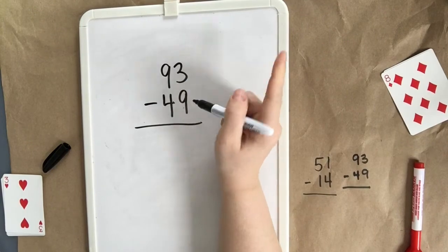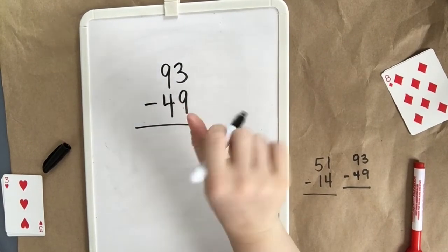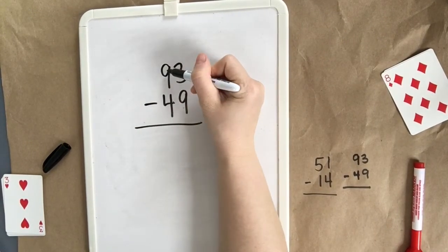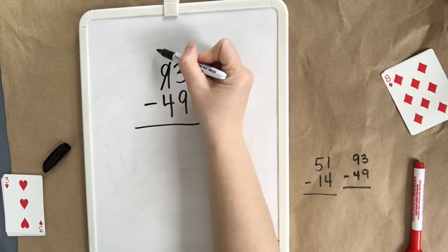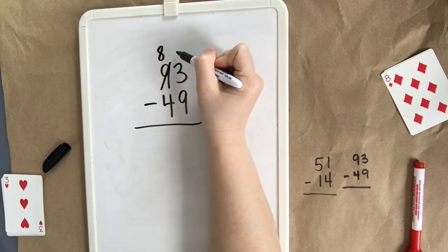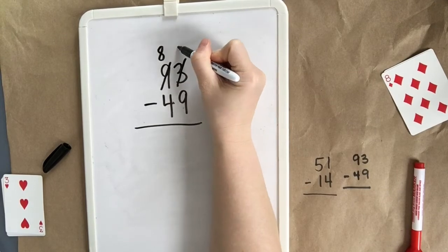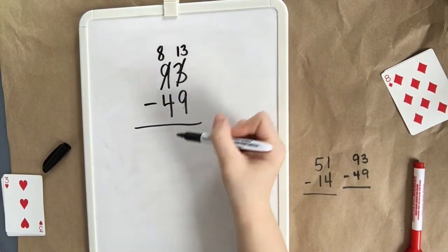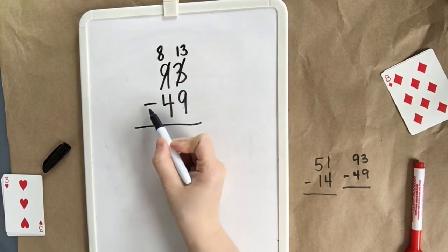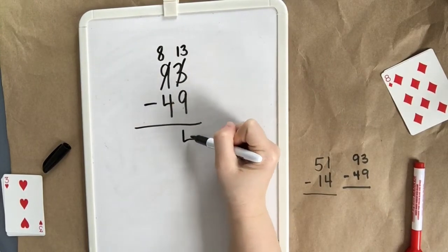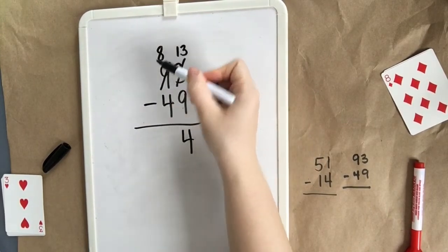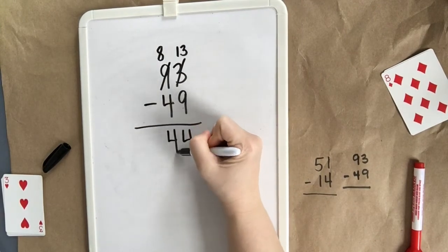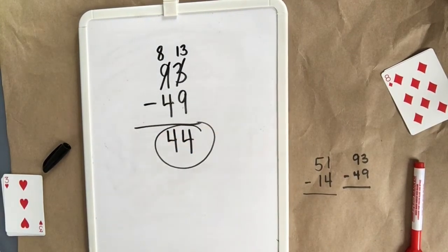Finally, we'll do the old fashioned way. We're just going to do some borrowing from our neighbors. We can't take 9 away from 3. So we're going to have to borrow from the 9 in the 10s place and make that an 8. Move the 10 over and 3 turns to 13. Now we can subtract 9 from 13 to get 4. And simply 8 subtract 4 equals 4. Great. 44 again.